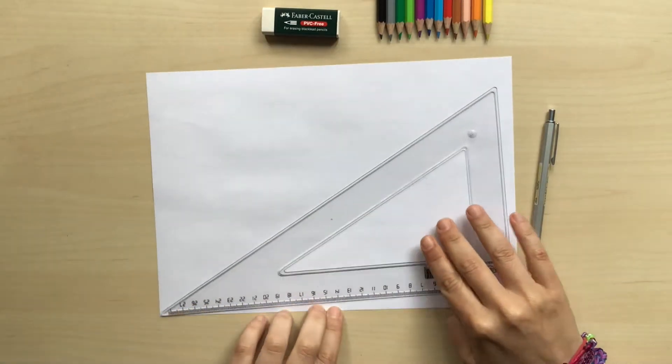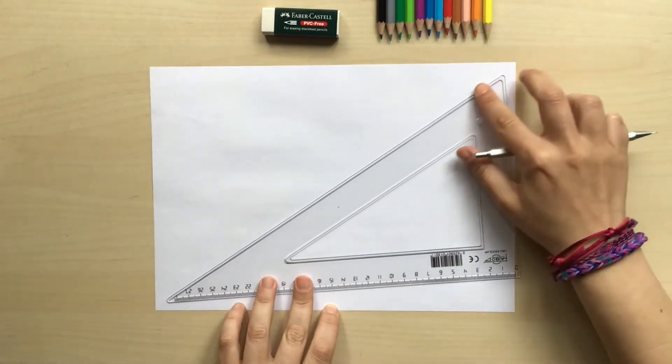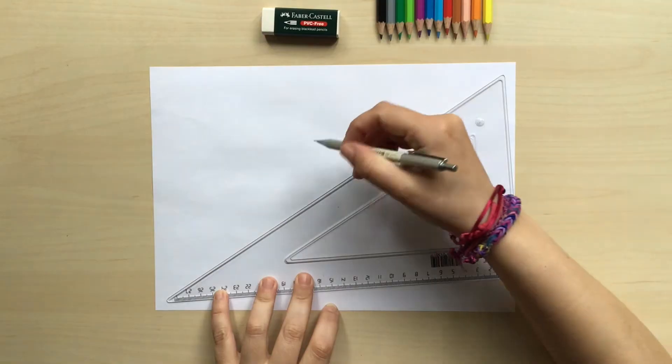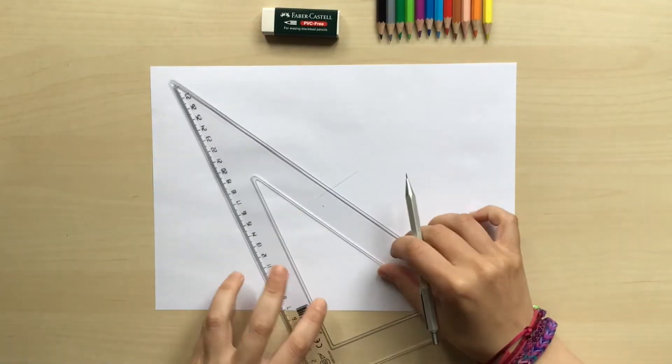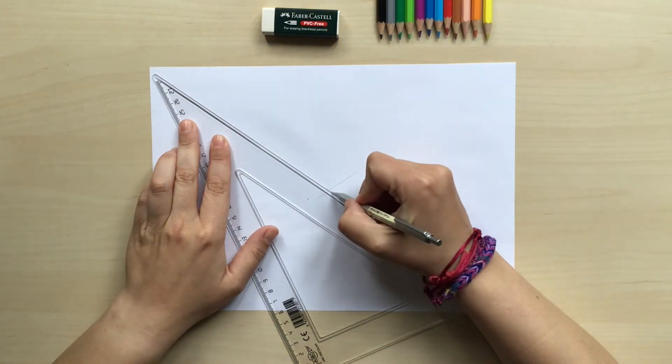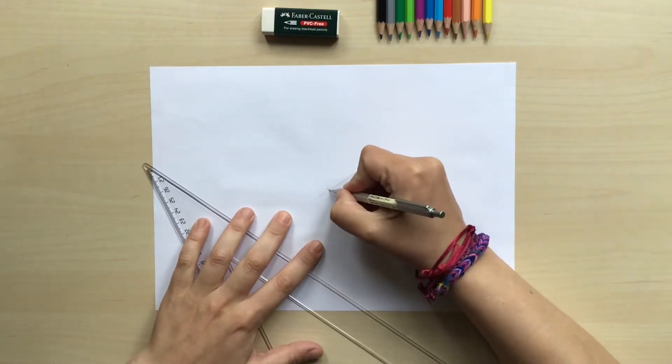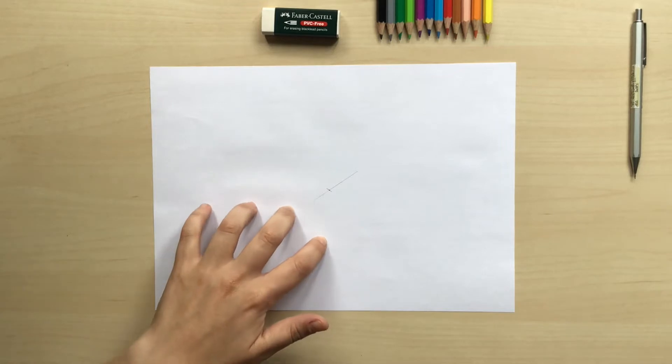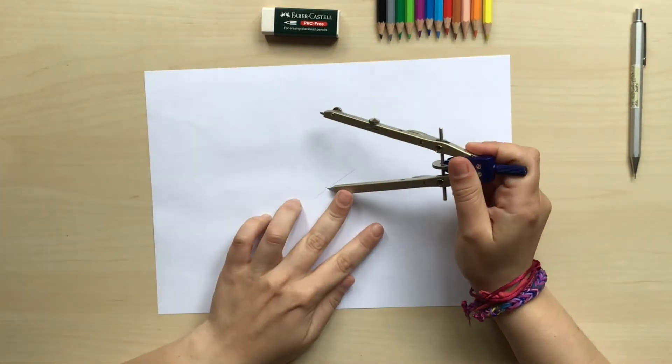Let's start by finding the midpoint of our paper. For that I'm gonna use the square set. I'm gonna trace a diagonal line that goes from one side to the opposite side and I'm gonna do the same with the other sides, and right there where those two lines meet that's gonna be approximately the midpoint of our paper.